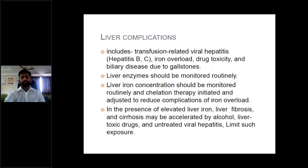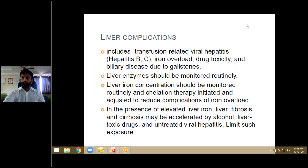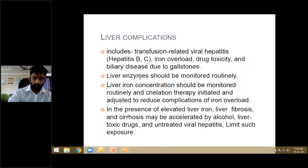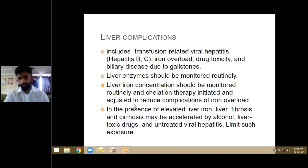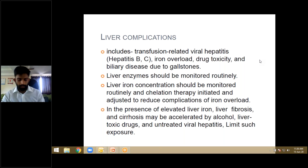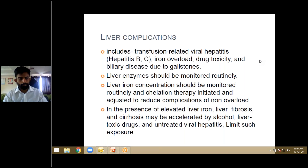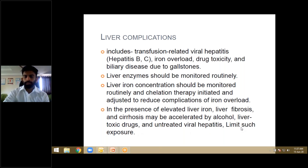Liver complications include transfusion-related viral hepatitis B and C, iron overload, drug toxicity, and biliary disease due to cholelithiasis. Liver enzymes and liver iron concentration should be monitored routinely. Chelation therapy should be initiated and adjusted to reduce iron overload complications. Chelation therapy for iron should be started at about 3–6 months after transfusion therapy begins. In the presence of elevated liver iron, fibrosis and cirrhosis may be accelerated by alcohol, liver-toxic drugs, and untreated viral hepatitis — so exposure should be limited and viral hepatitis treated aggressively.